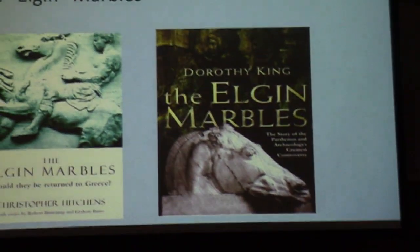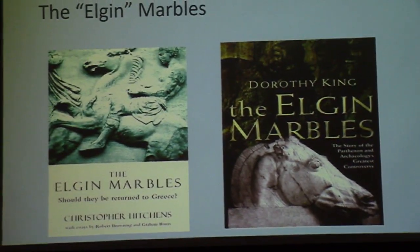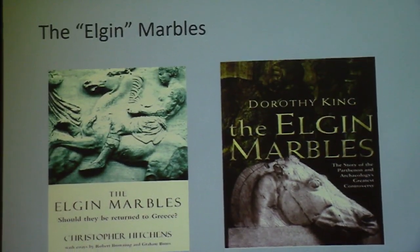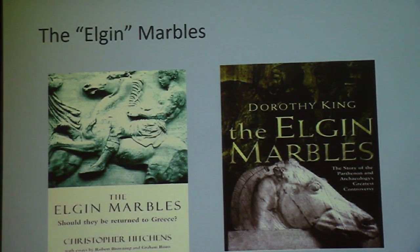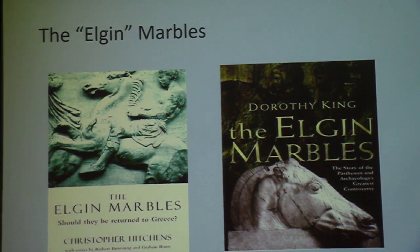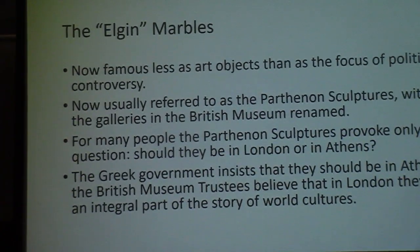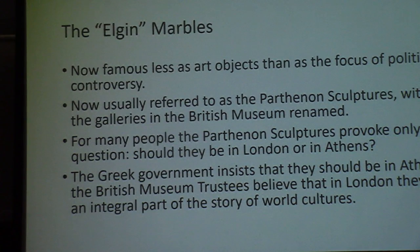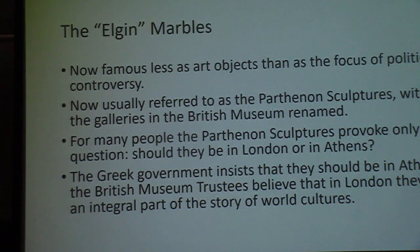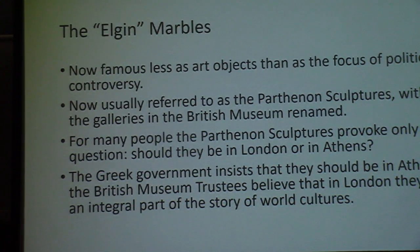The Elgin Marbles — lots of controversy, lots of discussion, multiple books published in the last few years dealing with the collection of the marbles and their suggested return. It could be argued that the Elgin Marbles are now famous less as art objects — and they are fantastic art — but really as the focus of political controversy, particularly between the British Museum and the Greek government.